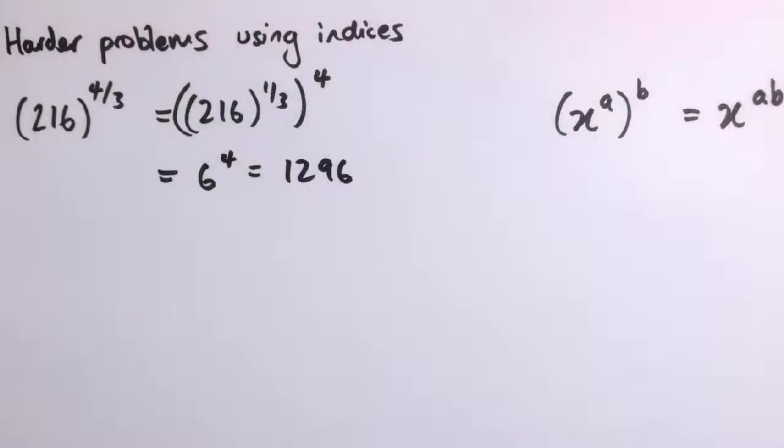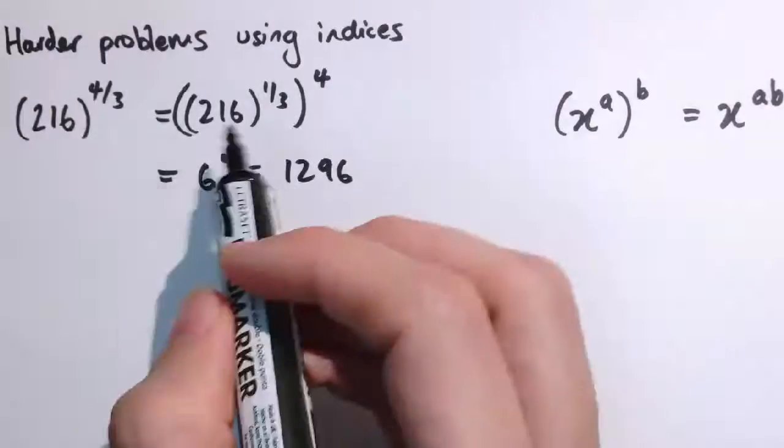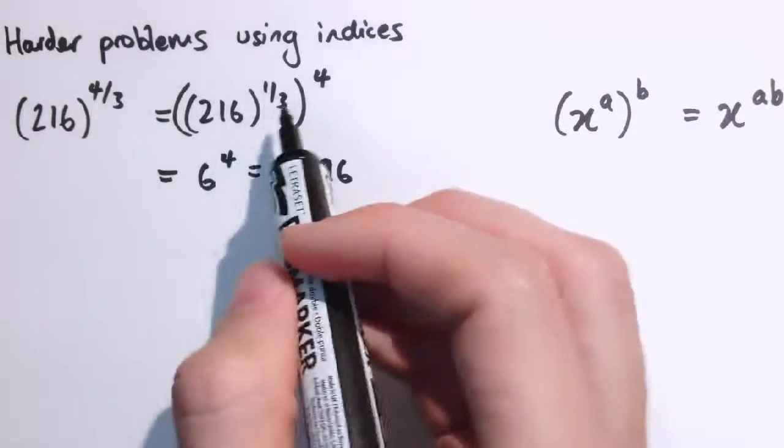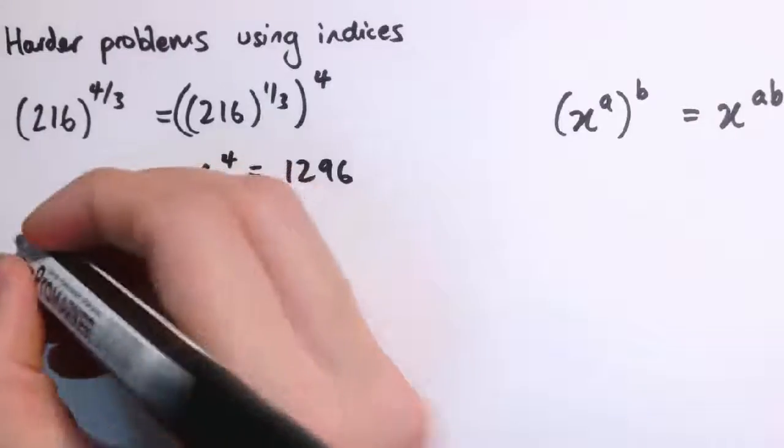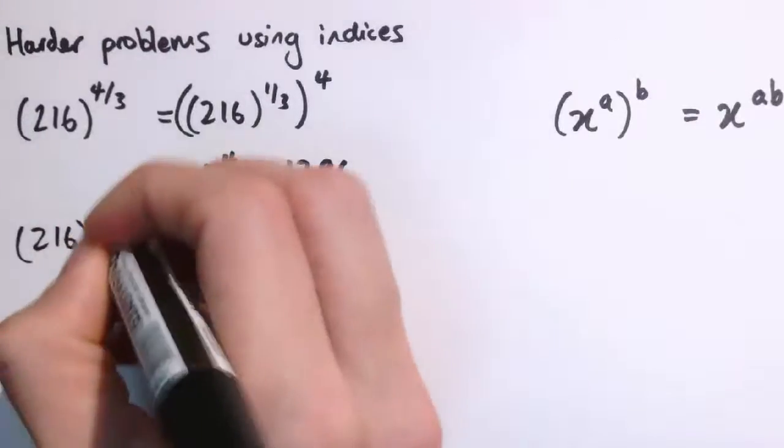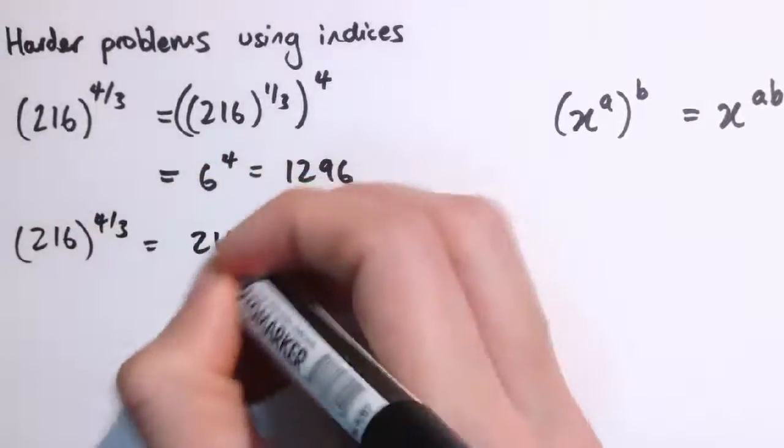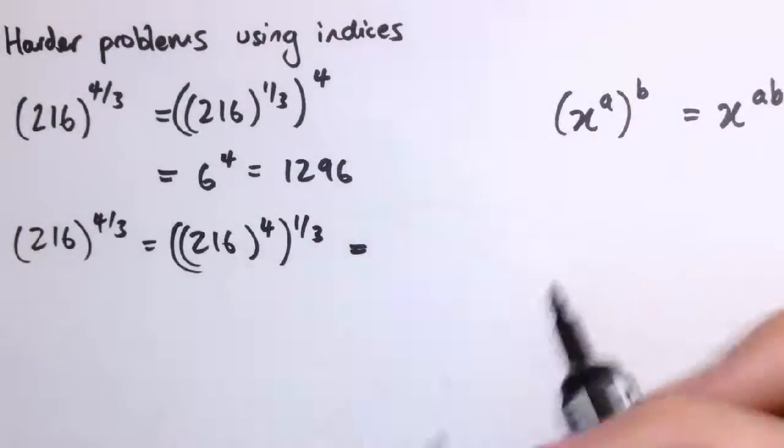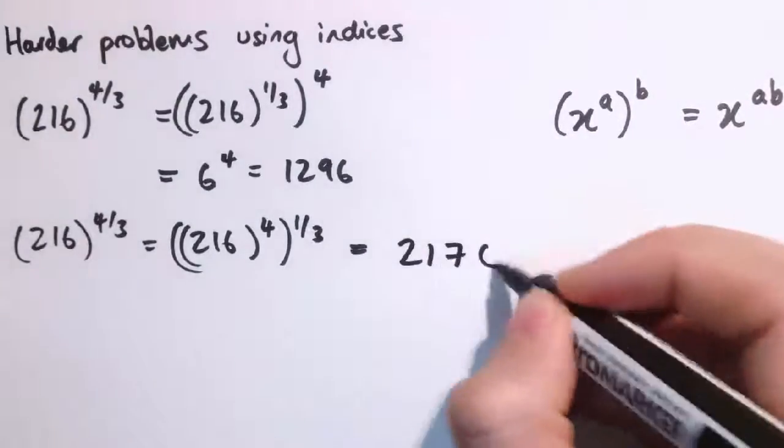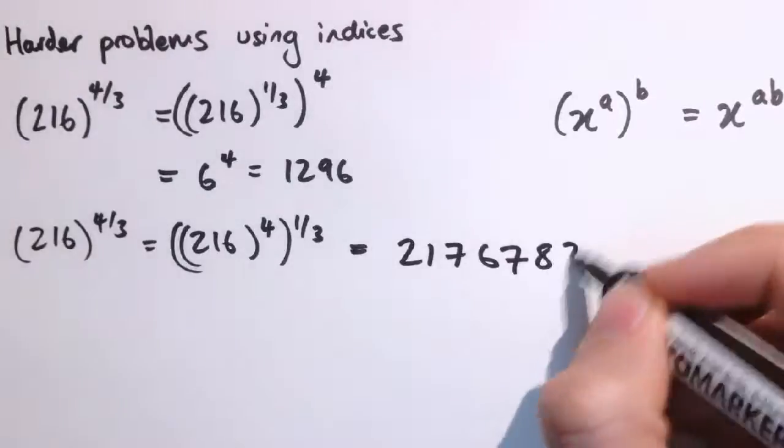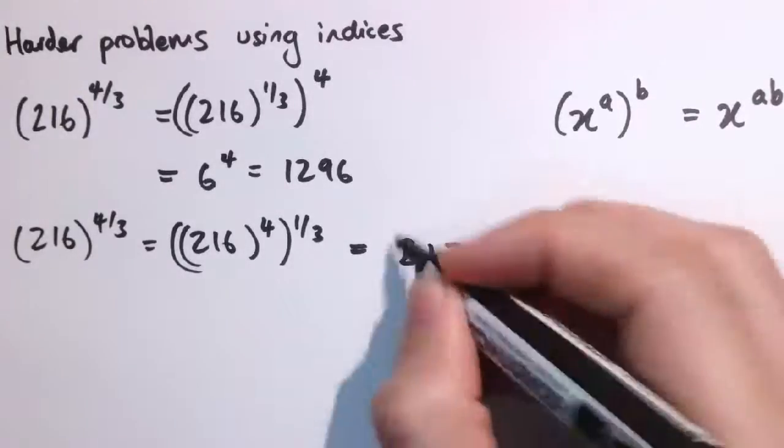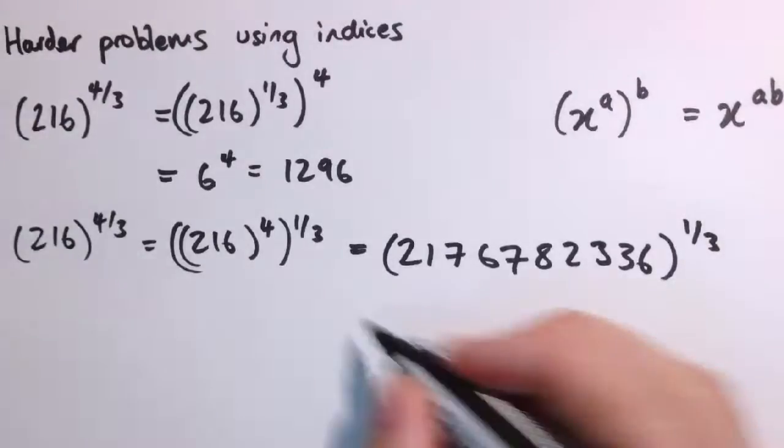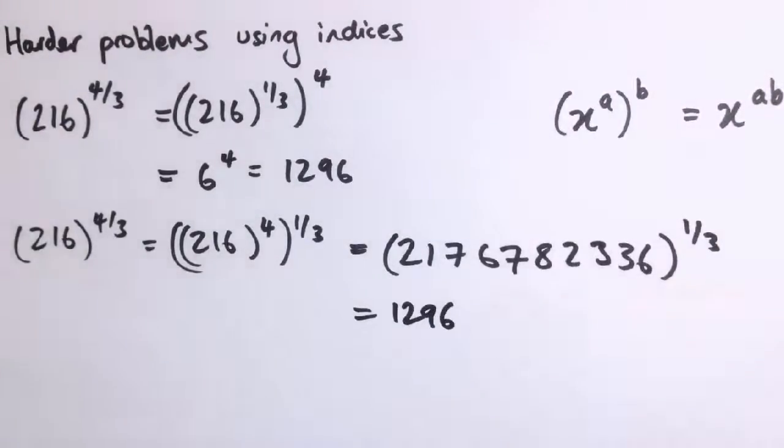Now we could of course do this the other way around, but we would prefer to do it this way around because it's a lot simpler. So what I mean is we could have instead said that 216 to the 4 thirds is equal to 216 to the 4, also the 1 third, but then what we'd have had to do is to find the fourth power of 216 which is 2176782336 and then taken the cube root of that. And in fact the cube root of that is 1296. So it would have been fine, but a lot more difficult.